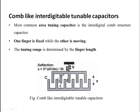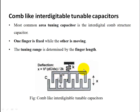The second classification is tuning based on area: the Area Tuning Capacitor uses a comb-like interdigitated tunable capacitor structure. One finger is fixed and the other finger is movable, attached to a spring. The tuning range is determined by the finger length.